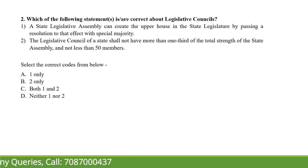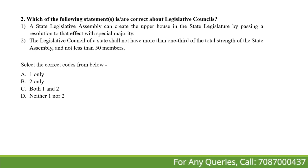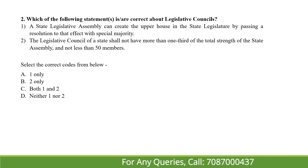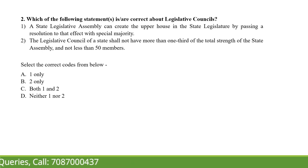Next: which of the following statements is or are correct about legislative councils? First, the state legislative council can create the upper house in the state legislature by passing a resolution to that effect with special majority. Second, a legislative council of a state shall not have more than one-third of the total strength of the state assembly and not less than 50 members.